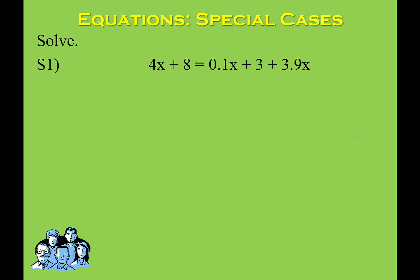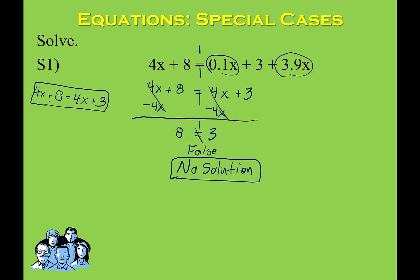This problem is for you to do. Go ahead and pause the video, solve the equation, and write the solution. Then resume the video to see the answer. You should have ended up with your variables canceling to 0 and a false statement such as 8 equals 3. The important part is that the variables disappear and your remaining statement is false — whether it was 8 equals 3 or 0 equals negative 5 or similar — so the answer is no solution.